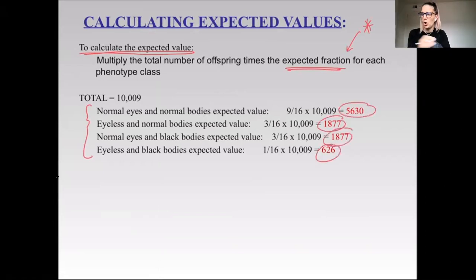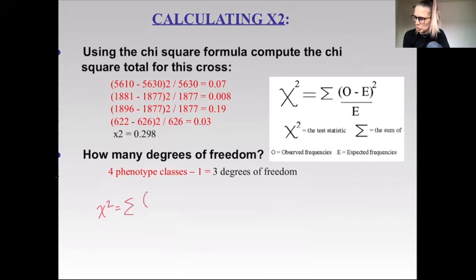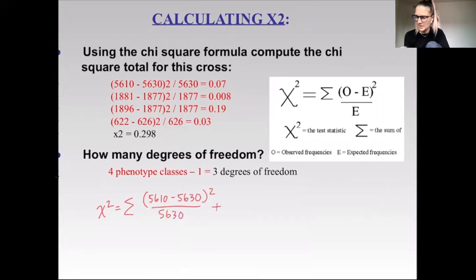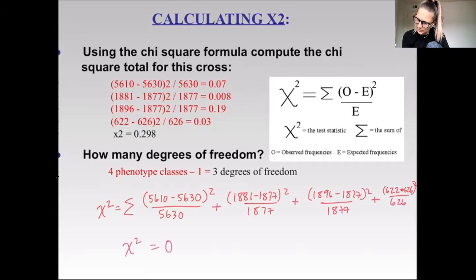So here are our expected values. For using the chi-square test, chi-square equals the sum of: observed minus expected, squared, over expected — for each category, summed across all four categories. And so what we get for our chi-square is 0.298.